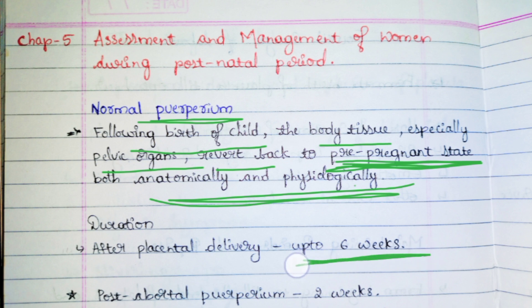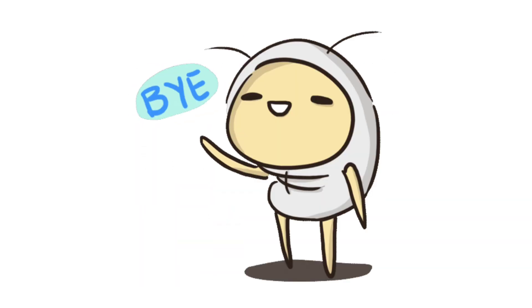The duration is six weeks. For the woman who has undergone the delivery process — whether C-section or normal delivery — it is six weeks. But for the woman who has undergone the abortion process, it is two weeks; within two weeks her body will get back to normal. Questions will be provided at the end of the chapter, so until then stay tuned.